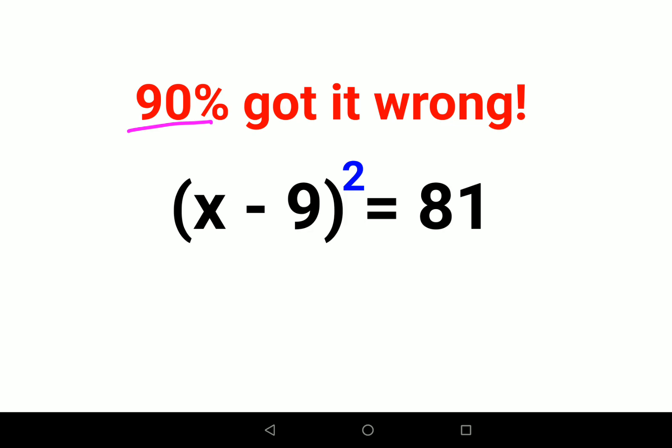So now the first thing we should do is take square roots on both sides. When I do square roots, this square and the root cancels, right? And here this comes out to be 9.